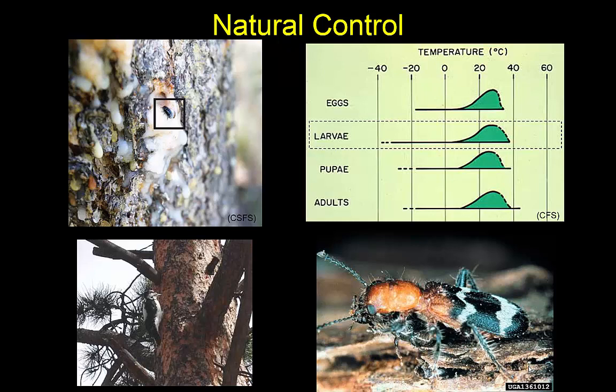There are a number of natural controls that affect mountain pine beetle and ultimately cause outbreaks to resolve and the insect to revert to low levels. But during an outbreak period, natural enemies may not be sufficient for many years. Mountain pine beetle can be like a runaway train for a while and often doesn't decline in abundance until quite a bit of damage has been done.